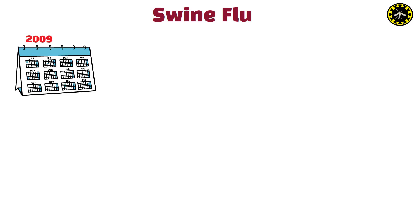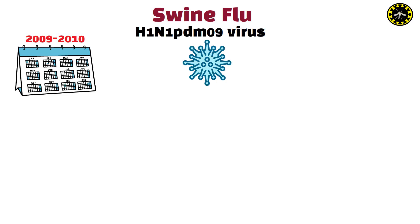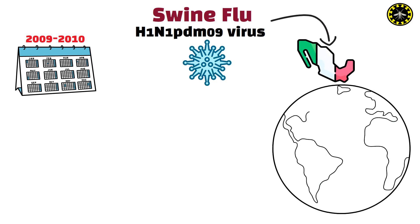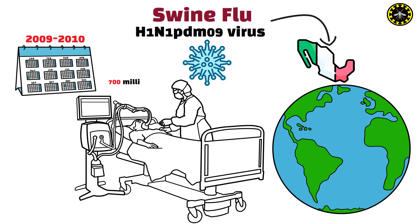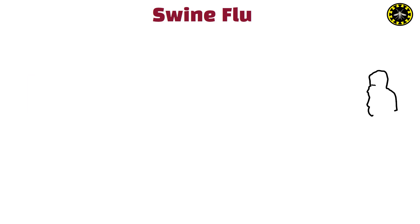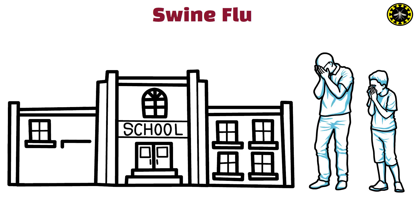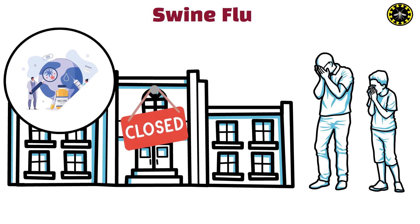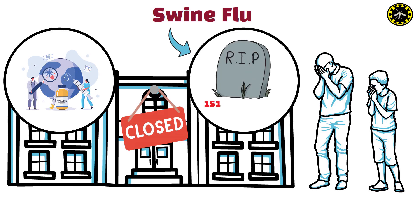Swine flu, 2009 to 2010. The swine flu, also known as the H1N1 PDM09 virus, was an influenza pandemic that originated in Mexico and quickly spread worldwide. It infected an estimated 700 million to 1.4 billion people, causing symptoms such as fever, cough, and body aches. The virus primarily affected children and young adults, leading to school closures and widespread vaccination campaigns. While less severe than initially feared, the swine flu claimed an estimated 151,700 to 575,400 lives.